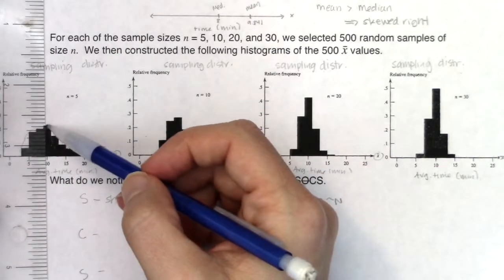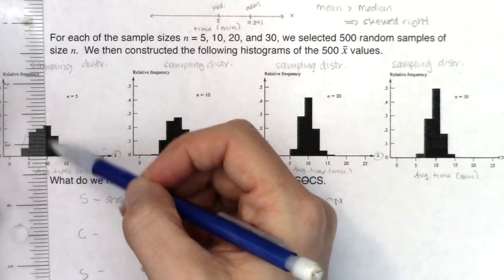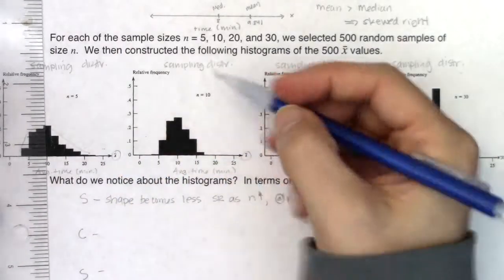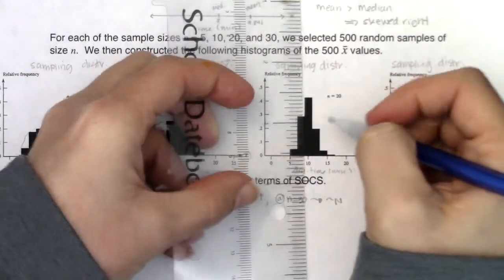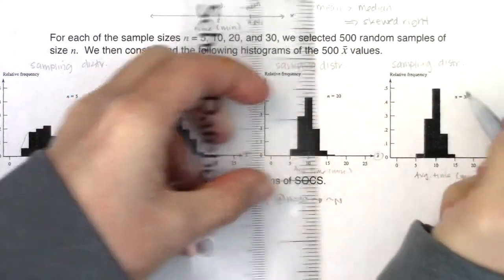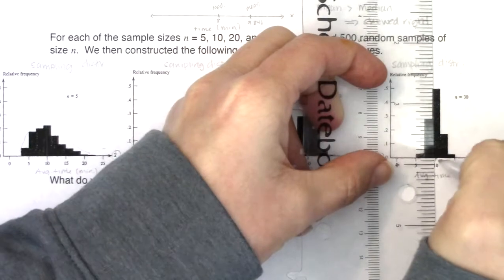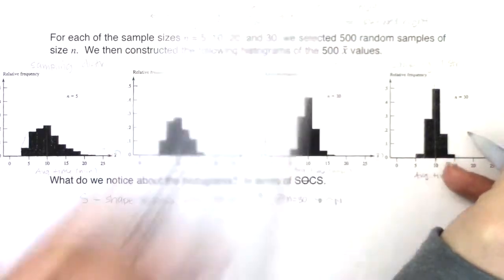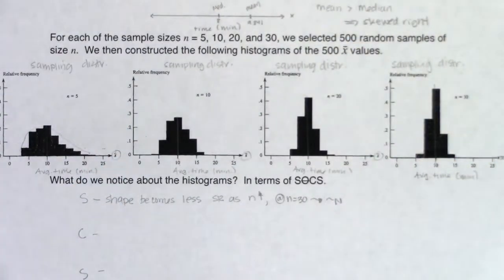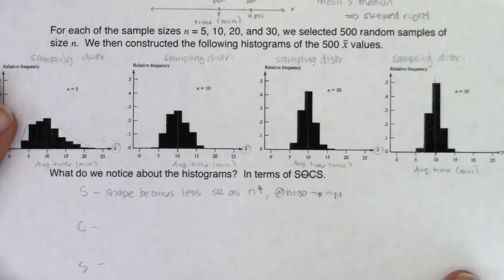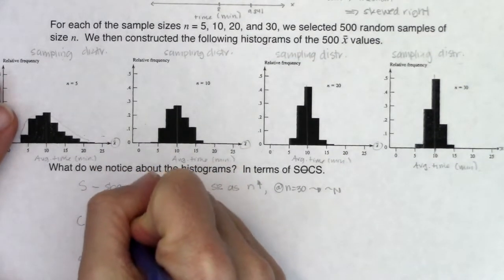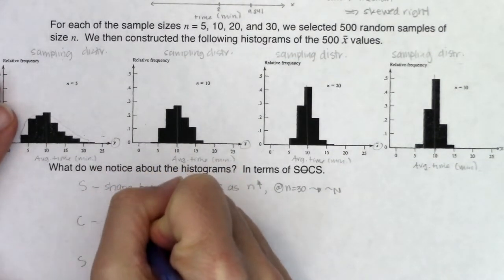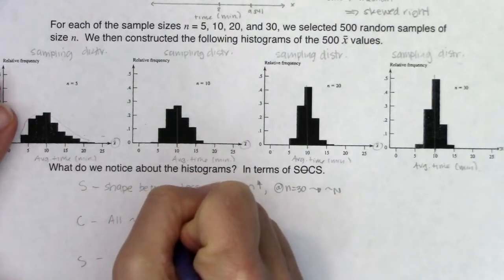In terms of the centers — if I look at the center of each sampling distribution, it's looking pretty close to 10. Center here is looking pretty close to 10, and pretty close to 10. So all of these centers look to be pretty close to 10 minutes.